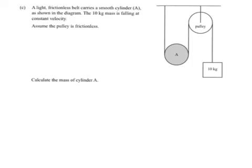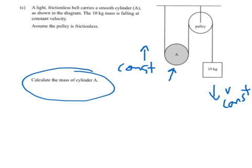Question C here. We have a light frictionless belt carrying a smooth cylinder A as shown in the diagram. The 10 kg mass is falling at a constant velocity. Velocity is constant, which also means that A is traveling up at a constant velocity. Assume the pulley is frictionless and we have to calculate the mass of cylinder A.